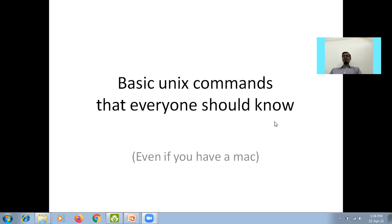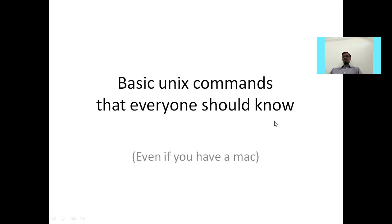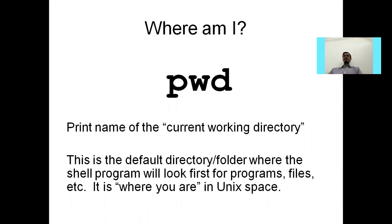The first command is the PWD command. PWD stands for Present Working Directory. Present working directory means if we want to know where we are working, we can use the PWD command — it prints the name of the current working directory. The current working directory is the default directory where the shell program will look first for program files, and it is where you are in Unix space.